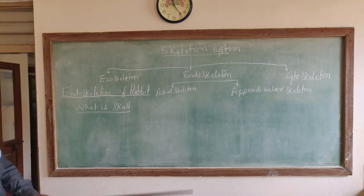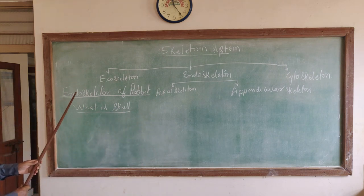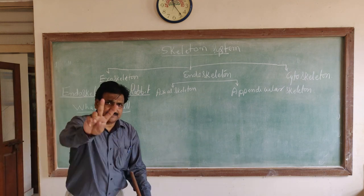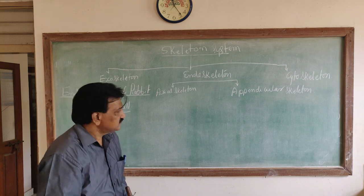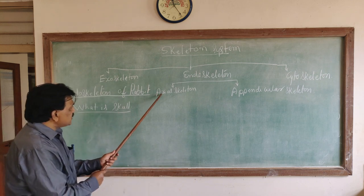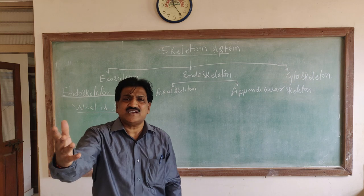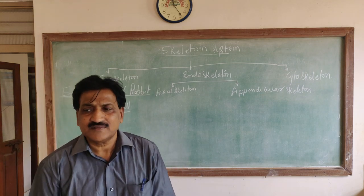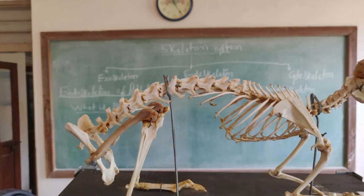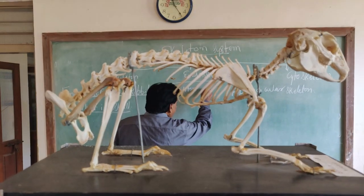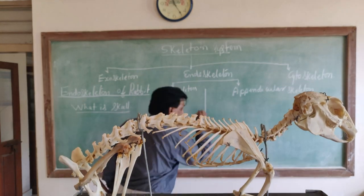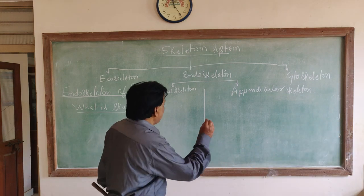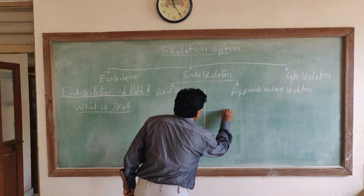The endoskeleton of rabbit is split into two categories: one is called axial skeletal and the second is called appendicular skeletal. The axial skeletal is present in the form of a vertical axis, whereas the appendicular skeletal is present in a horizontal or transverse axis.